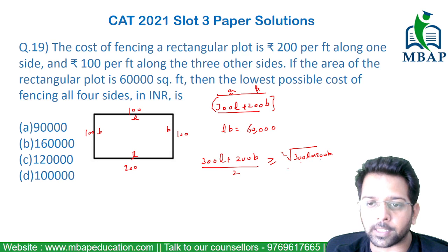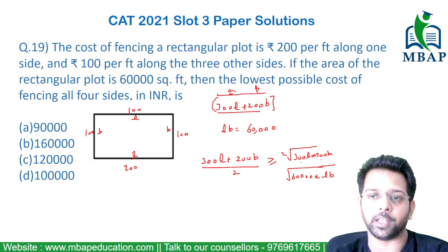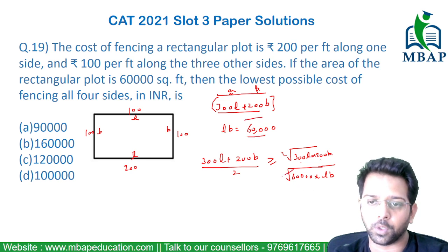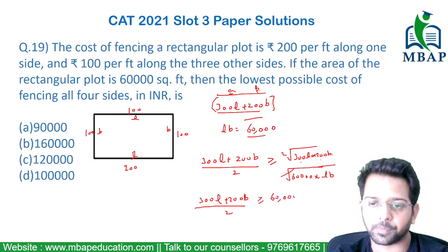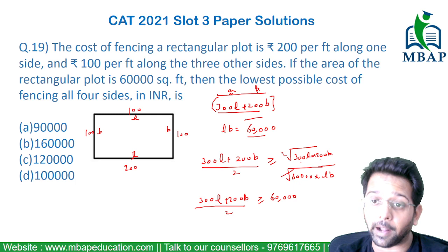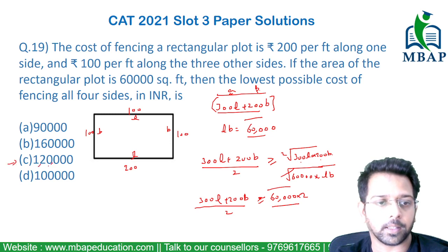300L into 200B will be a value which is 600,000 multiplied by LB. Now, LB itself is known to us — the value of LB is 60,000. So the square root will get cancelled: (300L + 200B) divided by 2 will be more than or equal to 60,000 itself, which means the lowest cost will be equal to 60,000 into 2, which is 1,20,000.